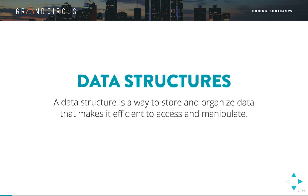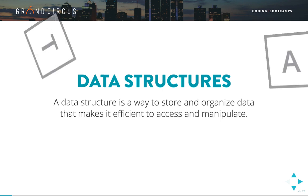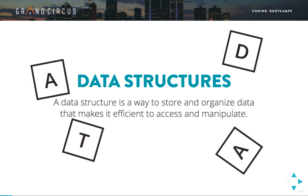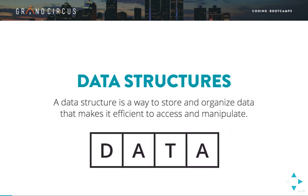Let's start off with a definition. A data structure is a way to store and organize data that makes it efficient to access and manipulate. When we talk about storing and organizing data, we're talking about how multiple values such as numbers and characters are organized together into a larger whole. An array is perhaps the most basic example of a data structure — multiple values arranged next to each other in sequential order. It is a simple and efficient data structure.